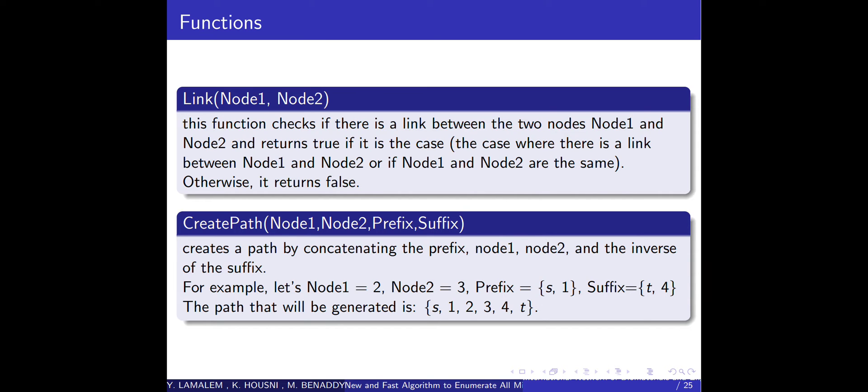Then we have a function called createPath which accepts four arguments: node1, node2, prefix, and suffix. Prefix and suffix are two sets of nodes. CreatePath creates a path by concatenating the set prefix, node1, node2, and the inverse of the set suffix. For example, let's say node1 equals node number 2 and node2 is node number 3, and the prefix contains the source node S and node number 1, and the suffix contains the sink node T and node number 4. The path that will be generated is S, 1, 2, 3, 4, and T.